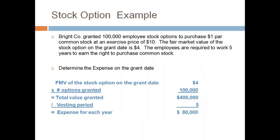We'll continue our explanation of stock options using an example with numbers. Bright Company granted 100,000 employee stock options to purchase $1 par common stock at an exercise price of $10. This means that after working for five years, the employee will be able to buy the stock from the company for $10. The fair market value of the stock option on the date of grant is $4. The employees must work five years to earn the right to purchase the common stock.